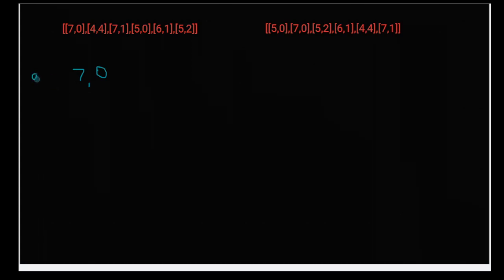So if we had something like nine in front of it, that would be invalid because nine is greater than seven, violating the zero count. But something like [5, 0] followed by [7, 0] is valid, because five is less than seven so it doesn't count — meaning zero people with height greater than or equal to seven are in front. That's what we need to verify.